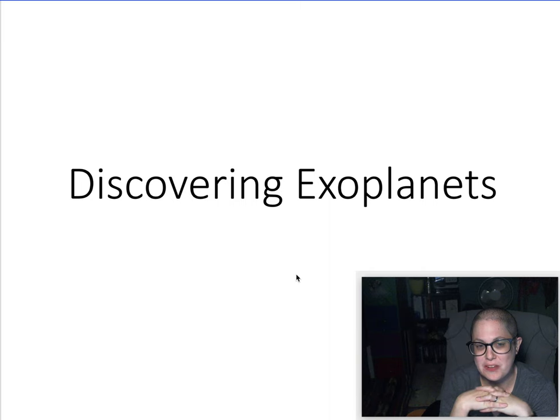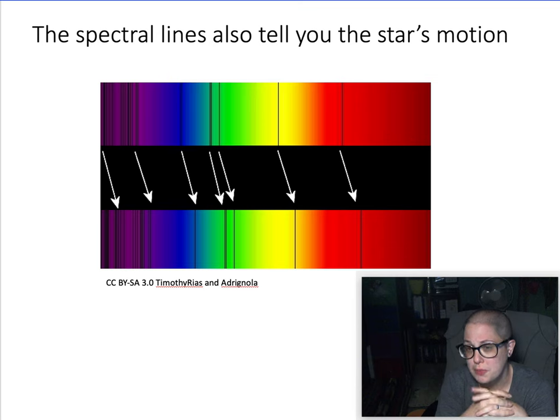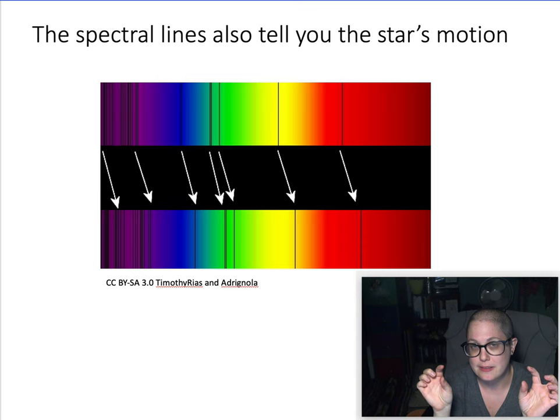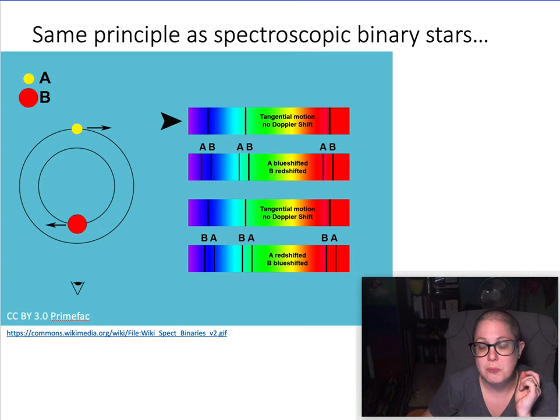Okay, so as we saw, you can look at the spectrum of a star. Now I'll give you an idea if it's motion towards or away from you. This is showing the top is an object that is not moving with respect to you, the bottom one is something that's moving away from you, it's red shifted.